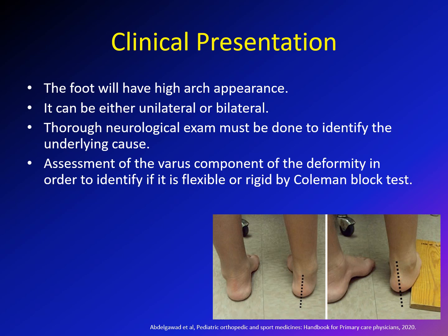To assess if the varus component is reversible, we use the Coleman block test. A block is placed on the outer side of the foot, elevating the fifth ray onto a platform, so the cause of the varus is no longer needed. If the varus corrects, it indicates reversible varus. As shown here, when we placed the fifth metatarsal on the Coleman block, the varus was corrected, indicating a flexible varus — meaning the main deformity is cavus and the varus is still reversible.